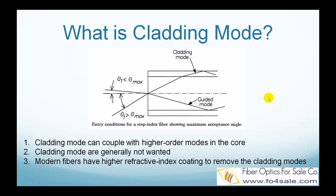This picture shows how light rays are coupled into the fiber. For light rays within the fiber's acceptance angle theta max, the light is captured by the core and propagates in the core. But there are some light rays that are outside of the fiber's acceptance angle, so they pass through the core-cladding interface into the cladding region.